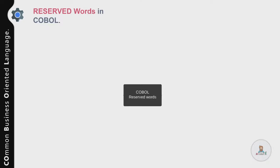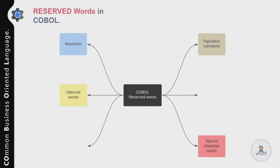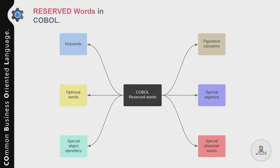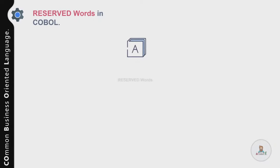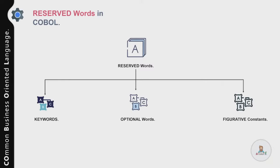A reserved word is a character string with a predefined meaning in a COBOL source unit. Reserved words are divided into six categories: keywords, optional words, figurative constants, special character words, special object identifiers, and special registers. We will focus on the first three — keywords, optional words, and figurative constants.